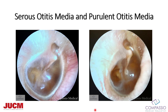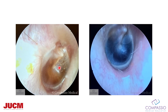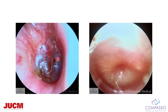Serous otitis media can come in numerous flavors. Look at this patient — very subtle amber fluid with a meniscus. This is normal TM above, fluid from here down. Over here we've got a middle ear full of serous amber fluid. Here there are bubbles with amber fluid. And look at this right ear — it's almost blue, but that again is just middle ear fluid. This patient came in with a right ear and I thought it was pus, but I was wrong — this is actually fluid under pressure.